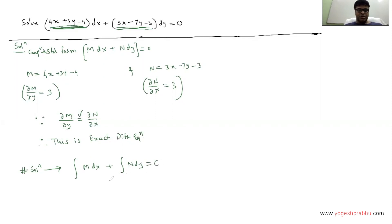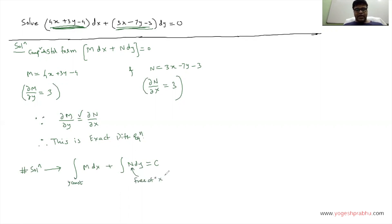Whenever you have an exact differential equation, the solution is written as: integration of M dx + integration of N dy = C. For the first integral, take y as a constant, and for the second integral, take only the terms of N that are free of x.